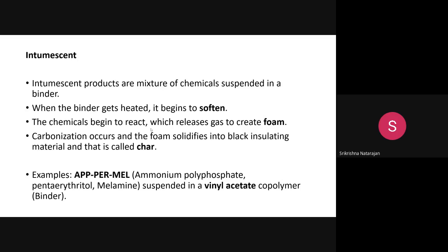For intumescent, you need three different chemicals: ammonium polyphosphate, pentaerythritol, and melamine — which is a type of resin. All three chemicals are suspended in an acrylic copolymer, specifically a vinyl acetate type copolymer, which serves as the binder. In ammonium polyphosphate, you can see NH3 and phosphate, so both nitrogen and phosphorus are present. These three chemicals react to form a foam.